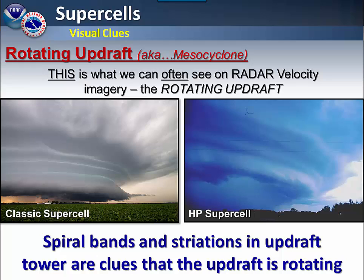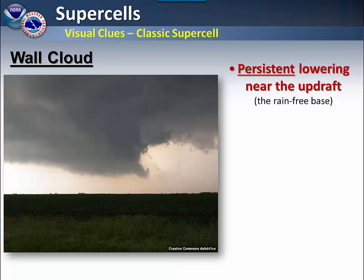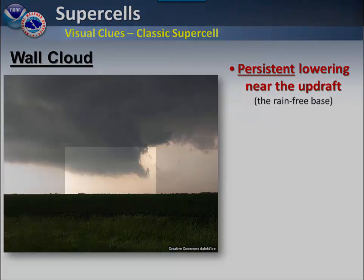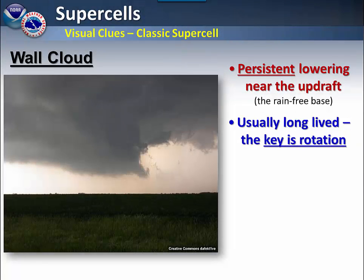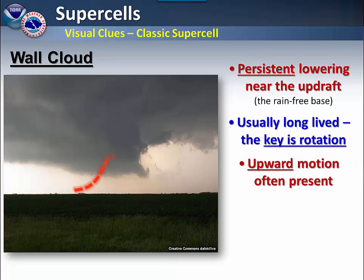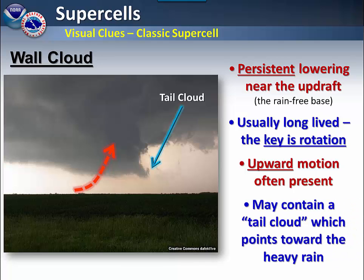Within both classic and high precipitation supercells, you can see the spiral bands rotating around them. This is a clue that the updraft is rotating. Look for a wall cloud — a persistent lowering near the updraft, also referred to as a rain-free base underneath it. These are usually long-lived, and the key is noting the rotation. Upward motion is often present when visually spotting these storms. Wall clouds may also have a tail cloud which points back toward the heavy rain.